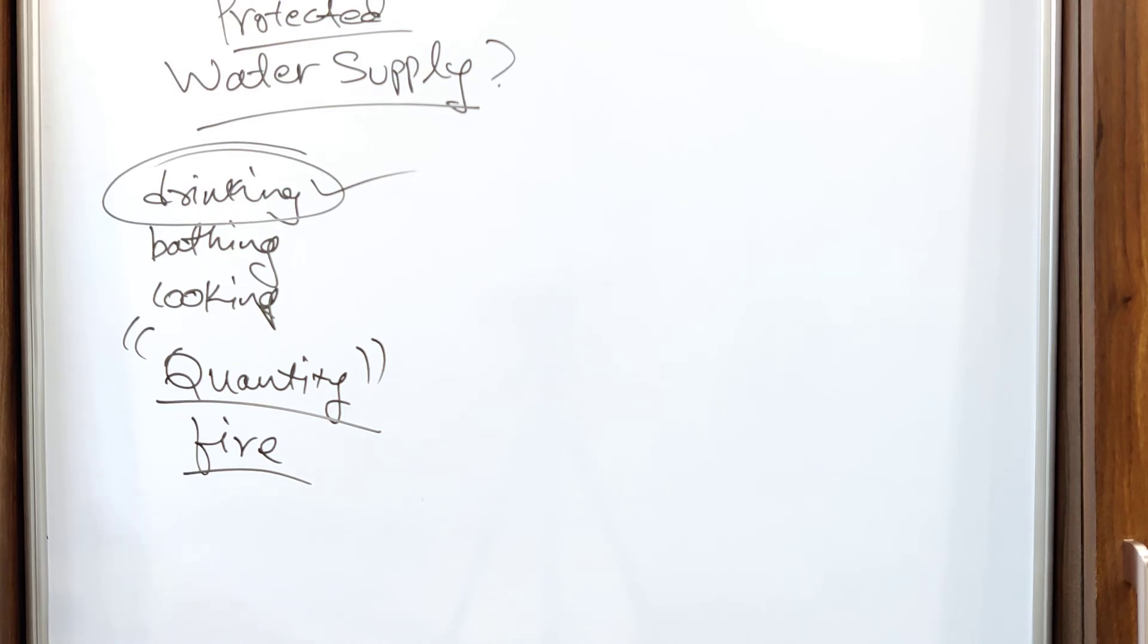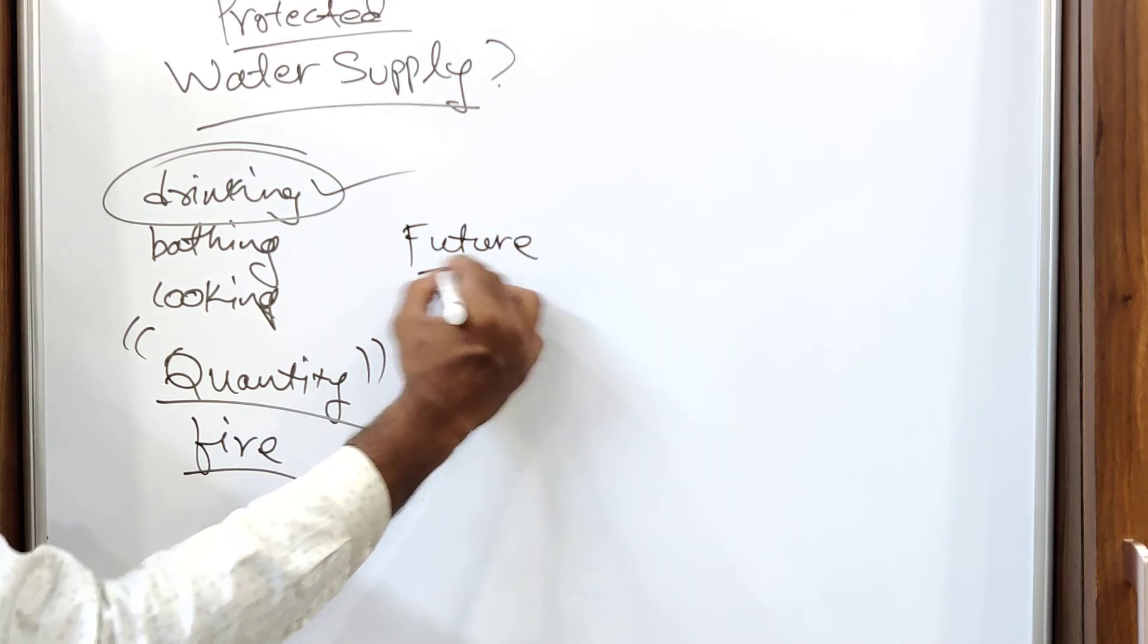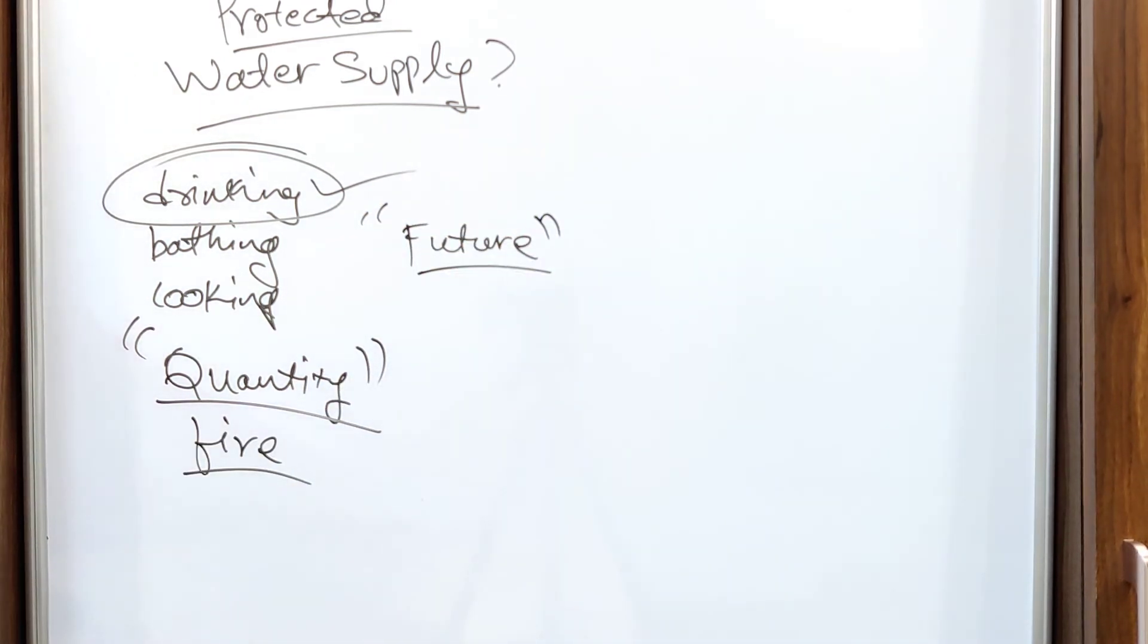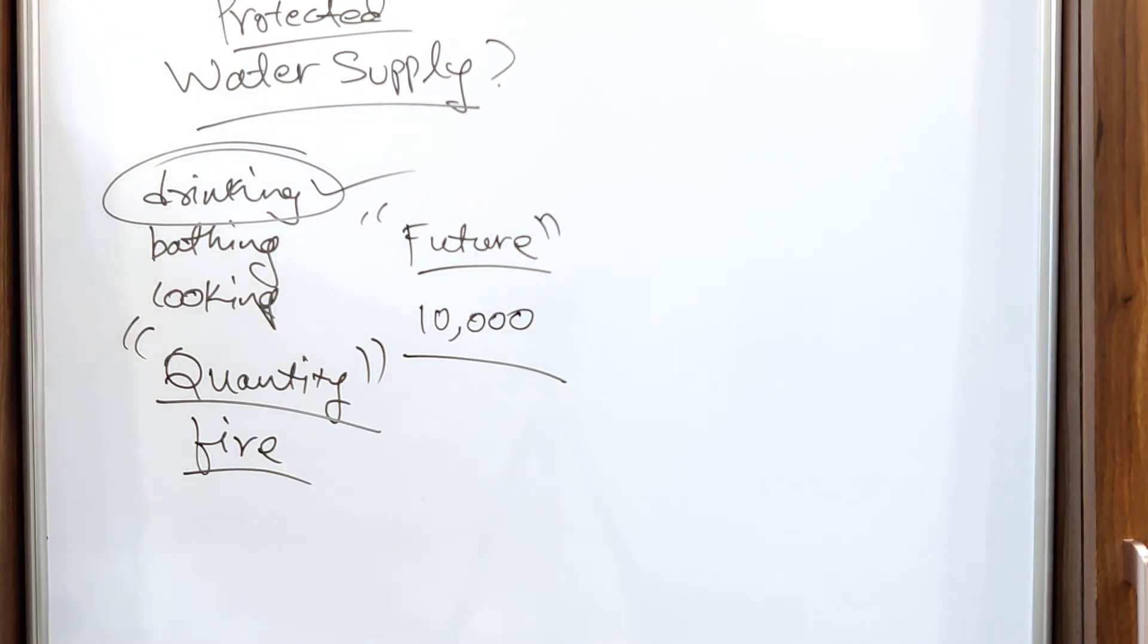One more objective is to make the provision for future use. Futuristic approach is one of the major objectives of water supply scheme. Why we must think about the future or upcoming generation? Because the entire beauty of water supply system is that itself. We don't think about today.